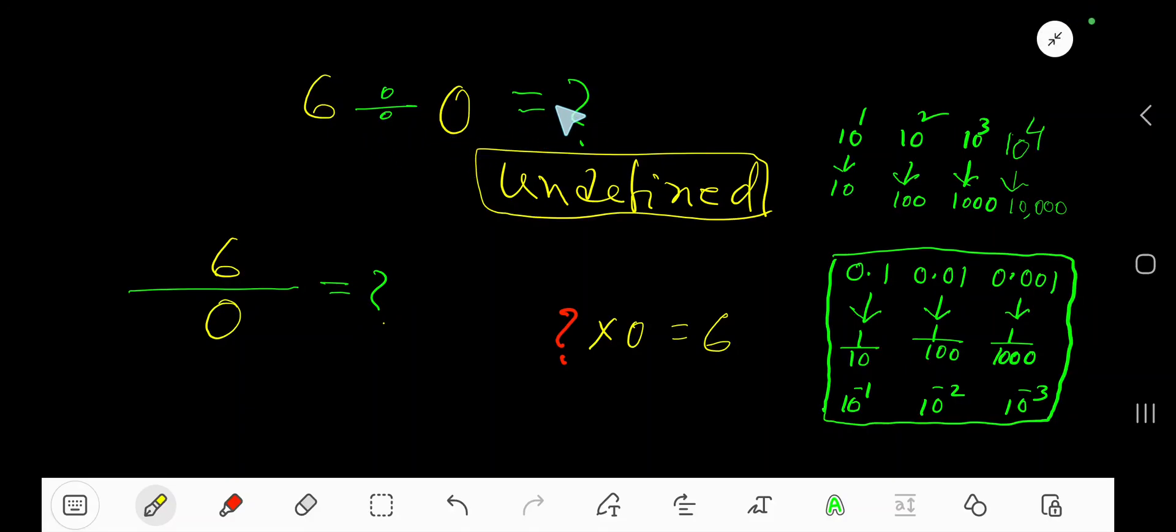Six divided by zero equals what? The result is undefined. Undefined means there is no answer. Let me explain this. Six divided by zero equals what? The six is the dividend.